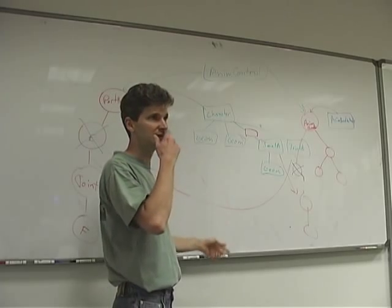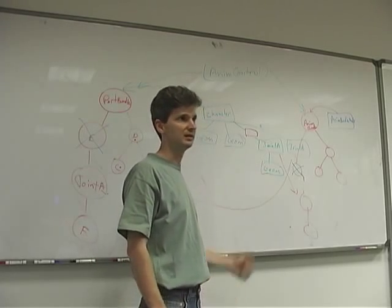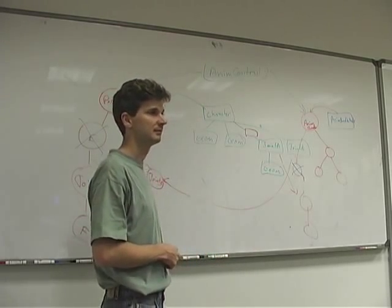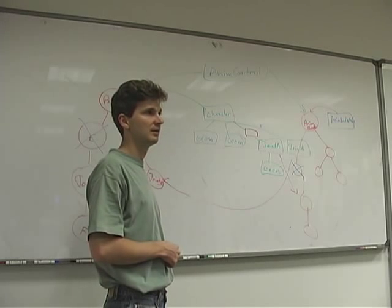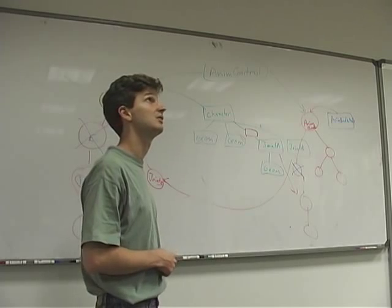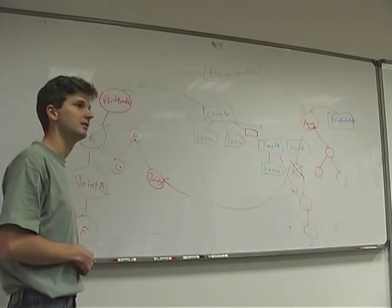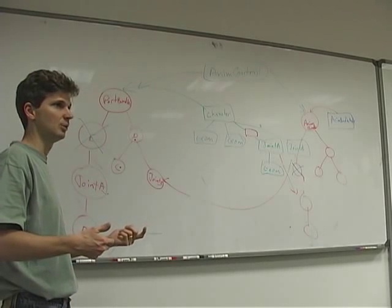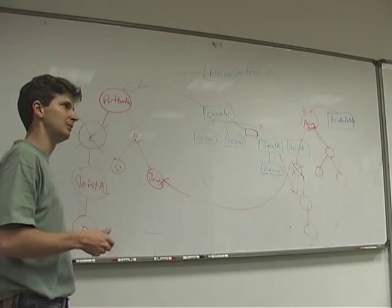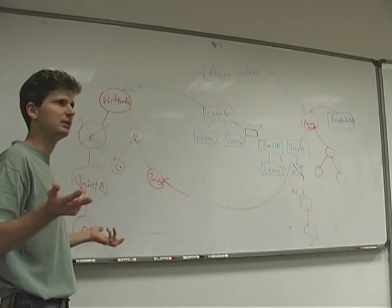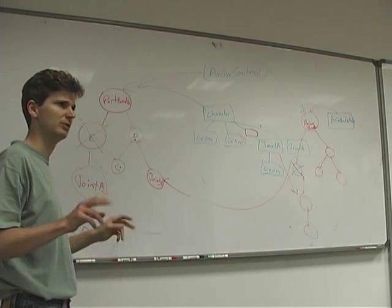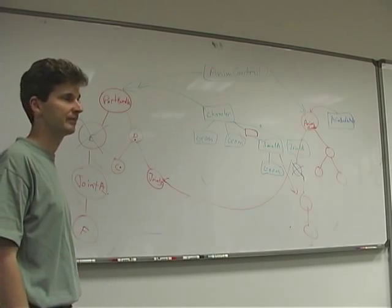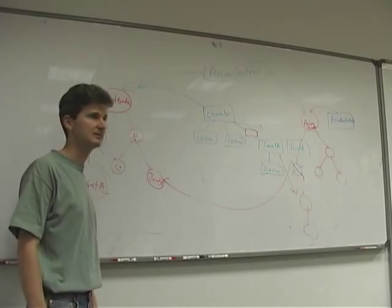There will be an egg_optchar --control option to do the same thing as --expose does for joints, specifying through the model pipeline which joints we intend to control at runtime. For actor.controlJoint(), you give it the joint name. Actor also needs the model root — typically 'modelRoot' — and the LOD name, because actor supports multiple characters and multiple LODs. Ultimately you give it the joint name, and it gives you back a node — or you can pass a node if you want.